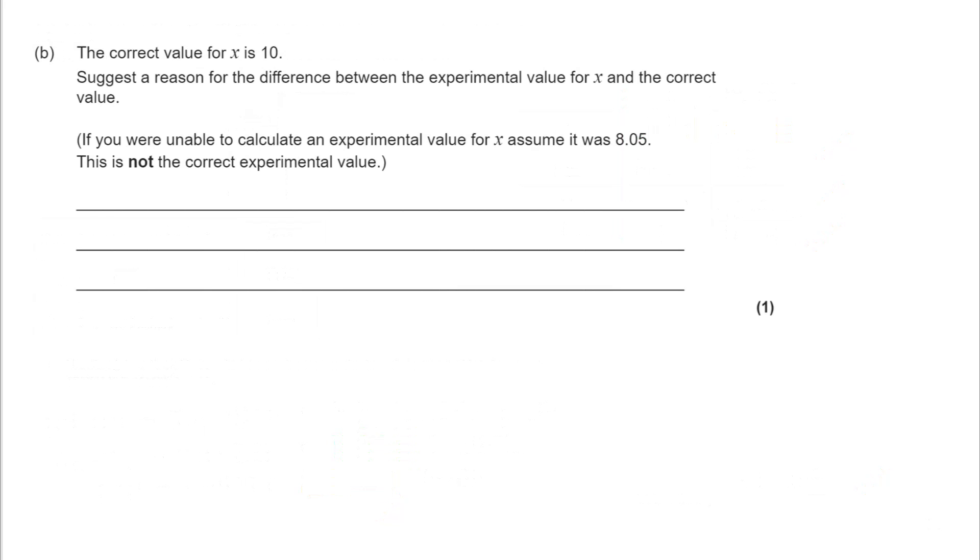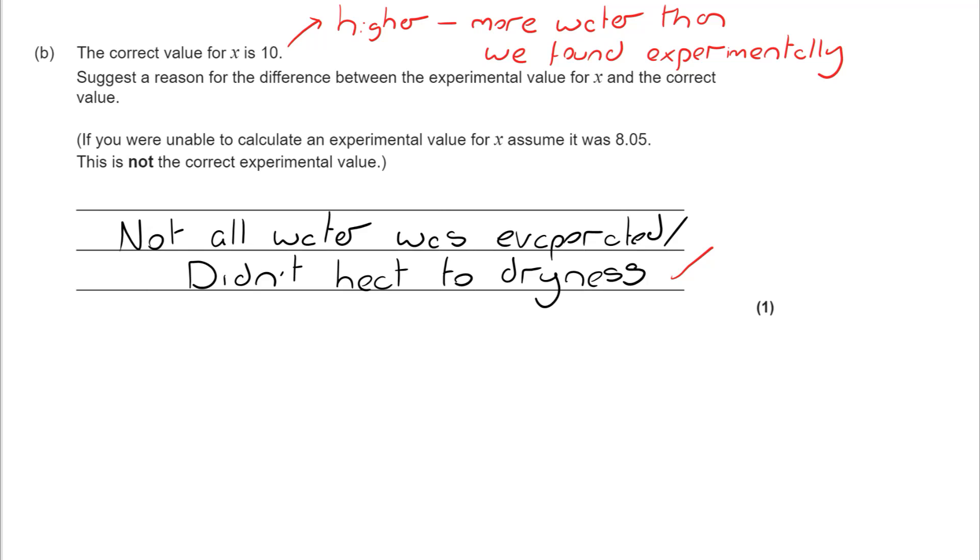Now, on the next question, we were told that the correct value for X is 10. We need to suggest a reason why. Now, it's very easy to just say experimental error. But we need to be specific and we need to be particularly specific, which is that X is higher than our experimental value. There is more water than we found. And we've got to find a way to explain that. So the answer that we're looking for is that maybe not all of the water evaporated. And a key term here that comes up in a lot of practical questions, maybe we didn't heat it to dryness.